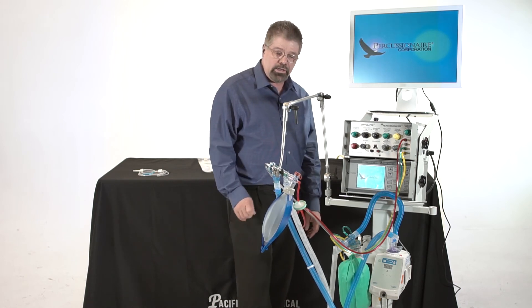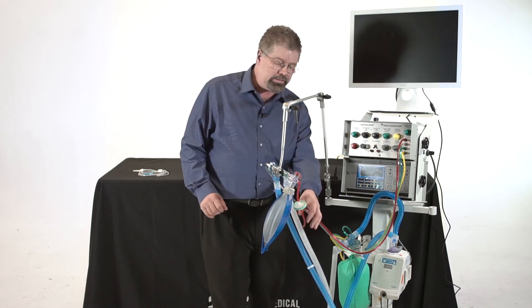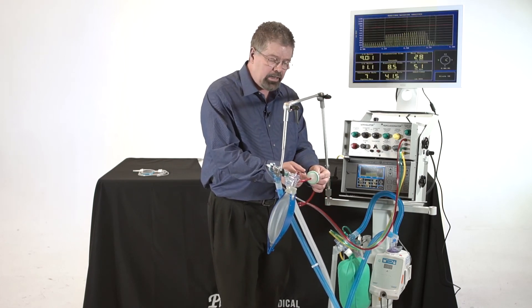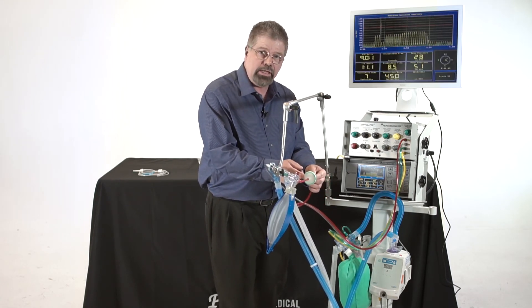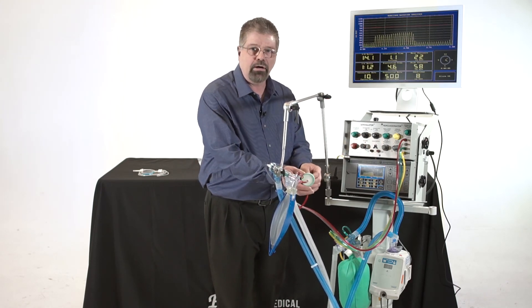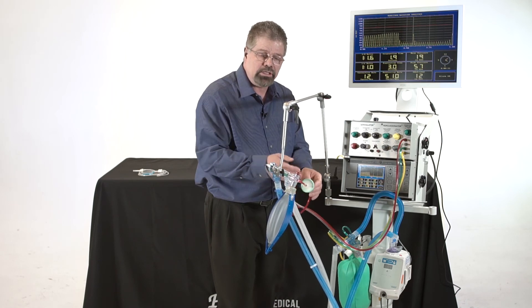One thing I want you to notice again and let's talk about is that there is a filter in this red line. This is a hydrophobic filter. It is meant to protect the ventilator from excessive water. If it gets more than half full of water, please change it.